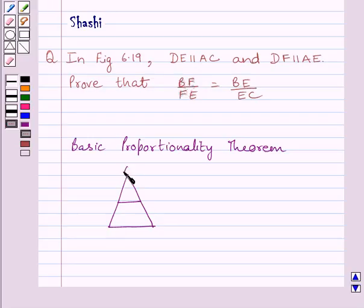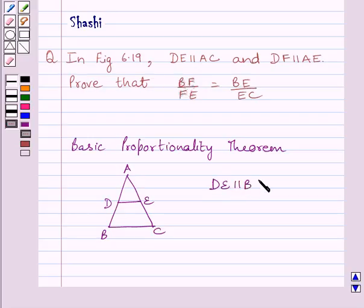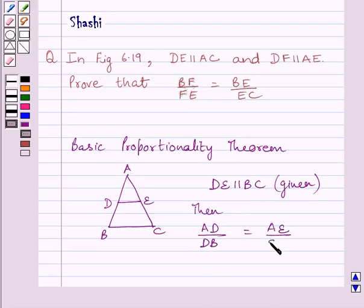If we are given a triangle ABC in which DE is parallel to BC, and DE intersects AB at D and AC at E — intersecting AB and AC at two distinct points — then by the basic proportionality theorem, AD upon DB is equal to AE upon EC.